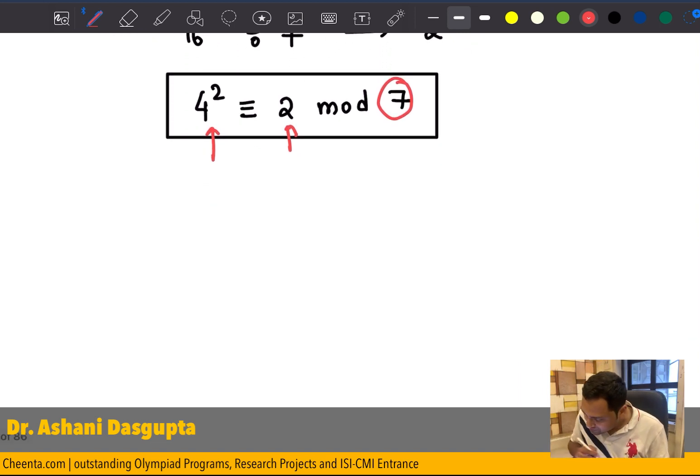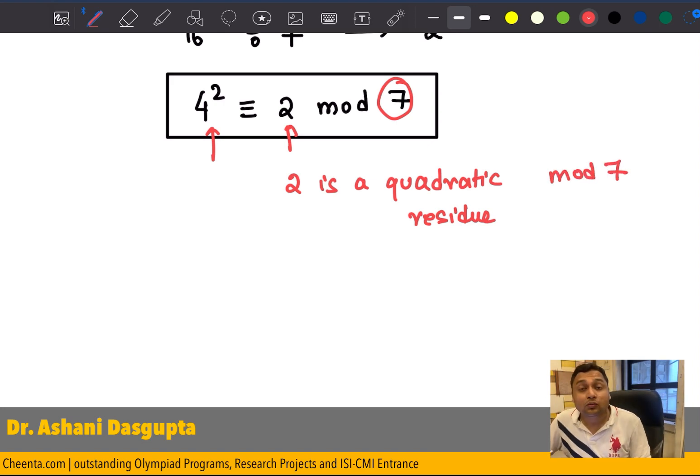So, in this particular case, 2 is a quadratic residue, a quadratic residue mod 7. Quadratic residue means it's a remainder of a square. It's a fancy way of saying 2 is a remainder of a quadratic, a square number. So, 2 is a quadratic residue mod 7.